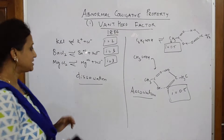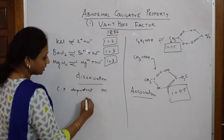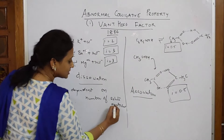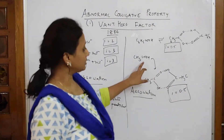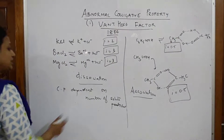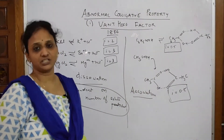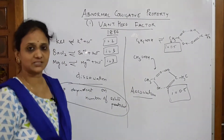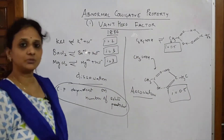How are we relating this to colligative properties? Colligative properties are dependent on the number of solute particles. Here, solute particles have gone from 1 to 2 (double) in dissociation. In the association case, the number of solute particles went from 1 to 0.5 (half). So variations due to association and dissociation also change the colligative properties — that is why we call them abnormal colligative properties. We multiply a factor of I with colligative properties.